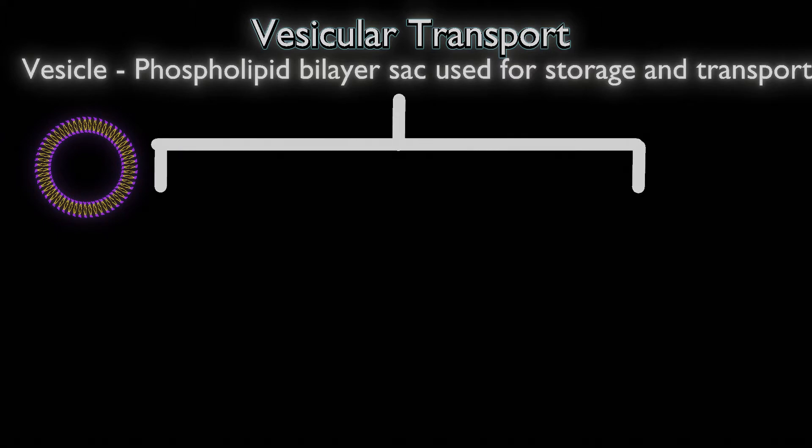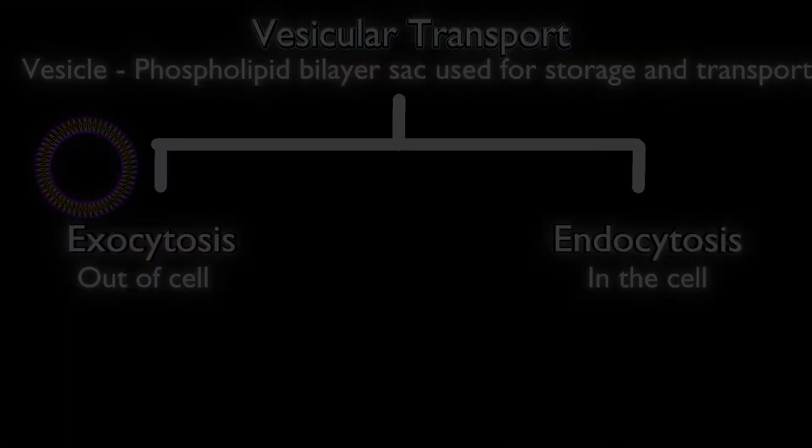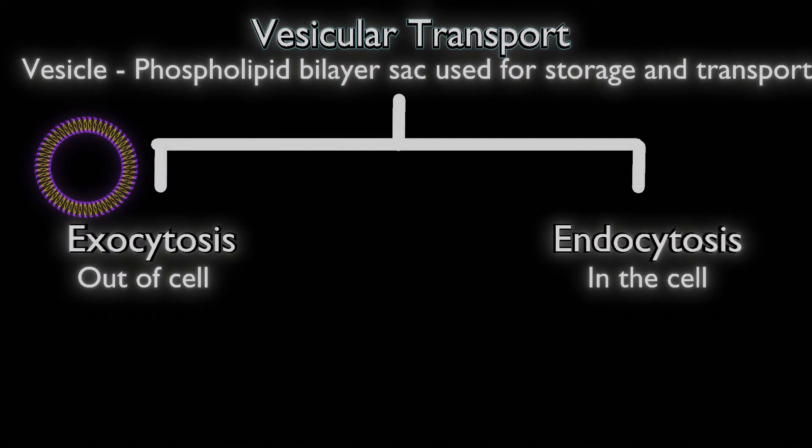There are two mechanisms of vesicular transport: exocytosis and endocytosis. Exocytosis is vesicles moving out of the cell, and endocytosis is vesicles moving into the cell. We're going to be carrying objects into the cell using endocytosis.